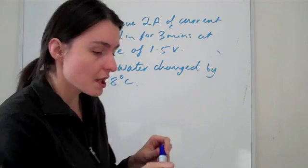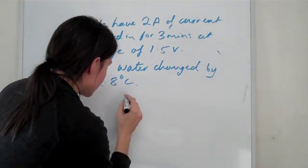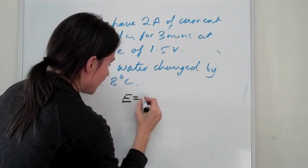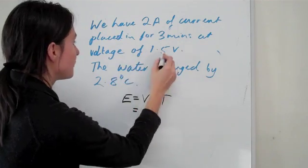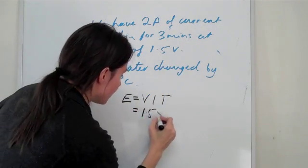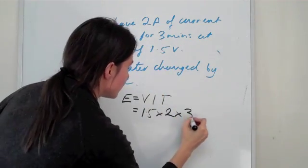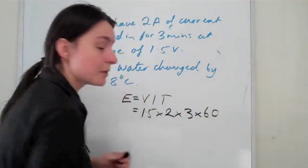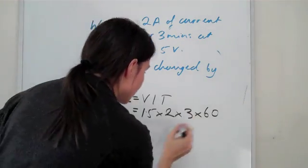Now we want to find the calibration factor. First of all, let's just practice that right now. What we do is we just get energy equals to VIT, which is the voltage which is 1.5 times by the current which is 2 times by the time which is three minutes times by 60.